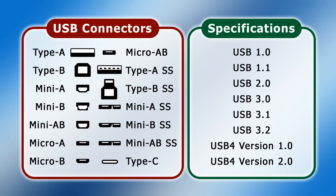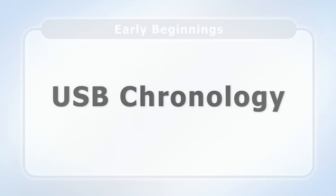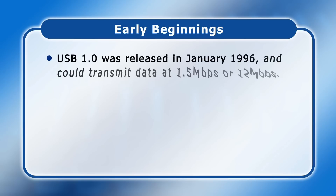Well, to borrow a phrase from Julie Andrews, let's start at the very beginning. The specification for USB 1.0 was released in January 1996 and could transmit data at either 1.5 or 12 megabits per second, depending on the cable used.